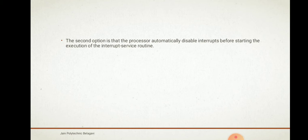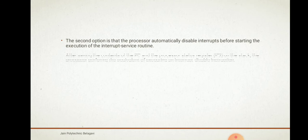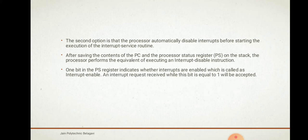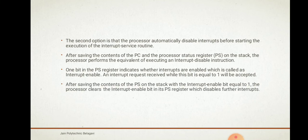The second option is that the controller automatically disables interrupts before starting execution. After saving the contents of the PC and the process status register on the stack, the processor performs the equivalent of executing an interrupt disable instruction. One bit in the PS register indicates whether interrupts are enabled — this is called the interrupt enable bit. An interrupt request received while this bit equals 1 will be accepted. After saving the PC contents on the stack with interrupt enable bit equal to 1, the processor clears the interrupt enable bit in its PS register, disabling further interrupts.